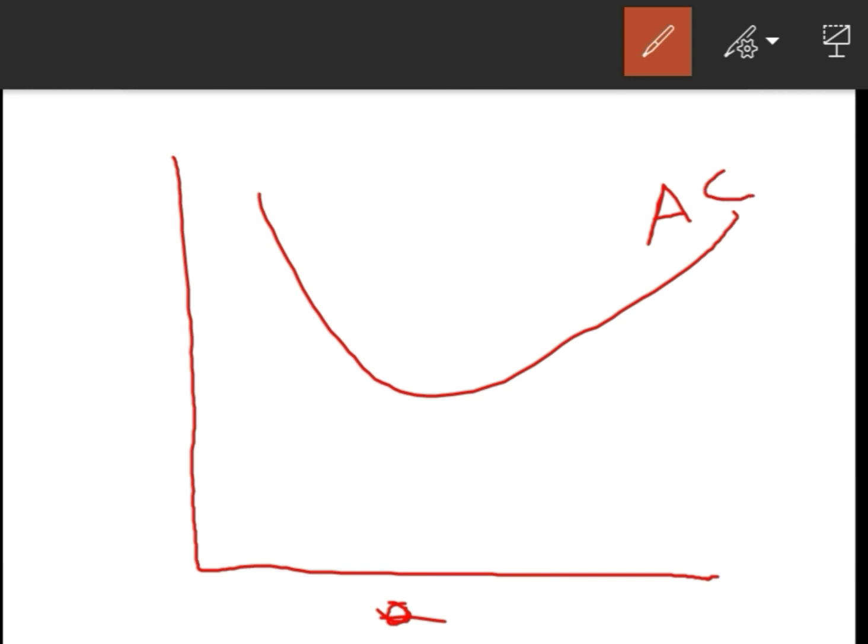Let me explain. This is the y-axis and this is the x-axis. The x-axis measures output. This is the average cost curve, that is AC, and this is the marginal cost curve, that is MC.